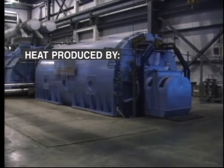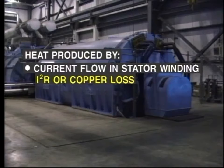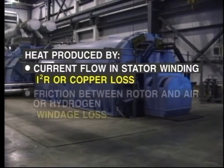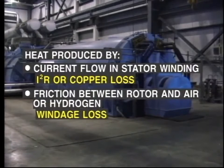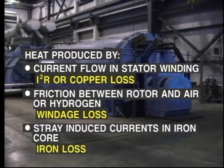Heat is produced within the generator in three ways. Current flowing in the stator winding produces heat, which is proportional to the square of the current. This is the I squared R, or copper, loss. Friction between the spinning rotor and the air, or hydrogen, in the generator produces heat called windage loss. Stray-induced currents in the iron core produce heat called iron loss.